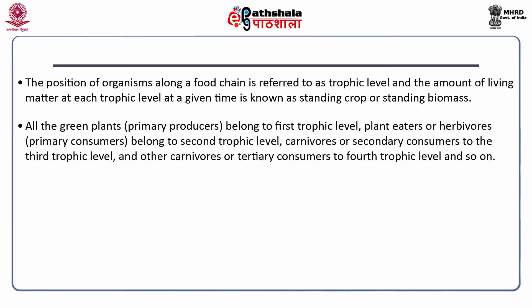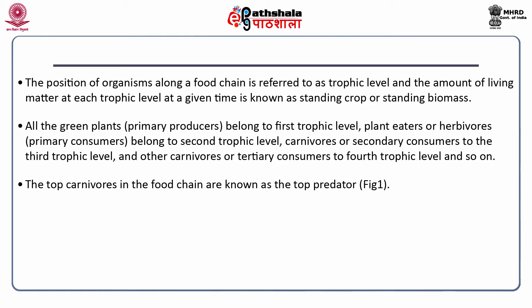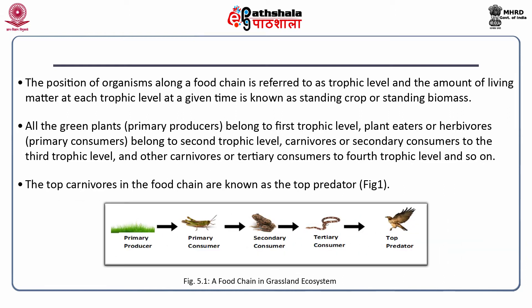All the green plants, known as primary producers, belong to the first trophic level. Plant eaters or herbivores are primary consumers and belong to the second trophic level. Carnivores or secondary consumers belong to the third trophic level, and other carnivores or tertiary consumers to the fourth trophic level. The top carnivores in the food chain are known as the top predators. This figure shows primary producers, then primary consumers, then secondary consumers, then tertiary consumers, and then top predators — a food chain of the grassland ecosystem.